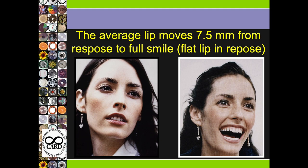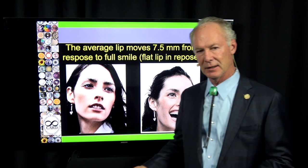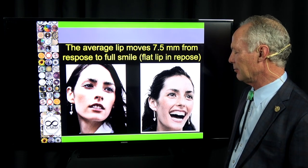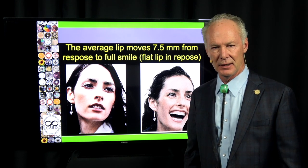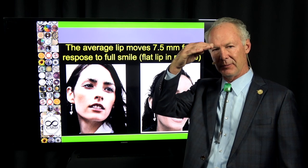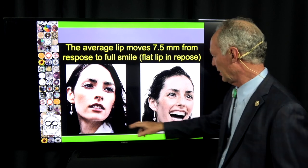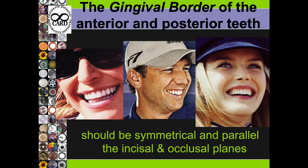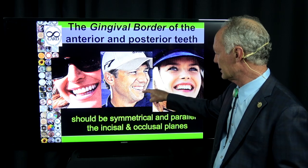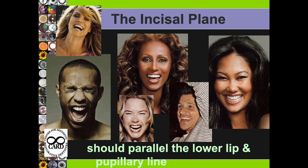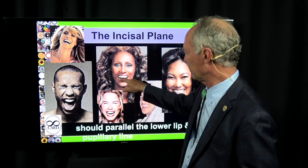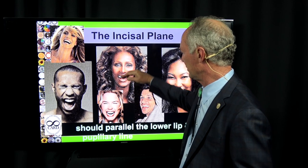The average lip moves seven and a half millimeters from repose to full smile. You classify lip position with the lip in repose — when it's just hanging. From repose to full smile, a flat lip moves about seven and a half millimeters, while a maximally arched lip only moves a couple of millimeters. The gingival border of the anterior and posterior teeth should be symmetrical and parallel the incisal and occlusal planes, with the incisal plane paralleling the lower lip and the pupillary line.